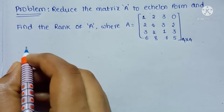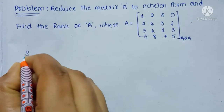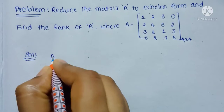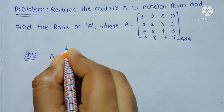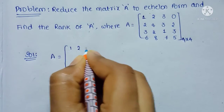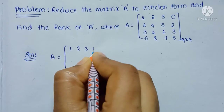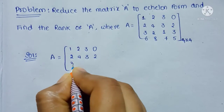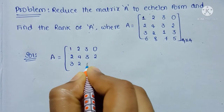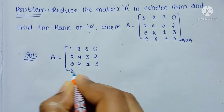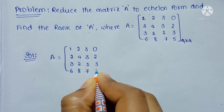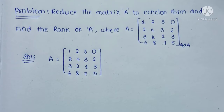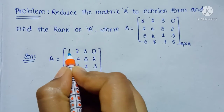If you see the problem, they have given matrix A equal to: Row 1: 1, 2, 3, 0; Row 2: 2, 4, 3, 2; Row 3: 3, 2, 1, 3; Row 4: 6, 8, 7, 5. Here we have a 1 as the first non-zero element.